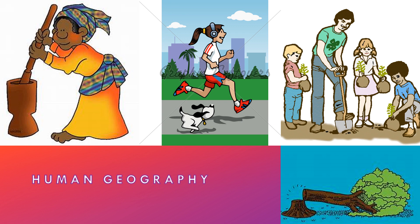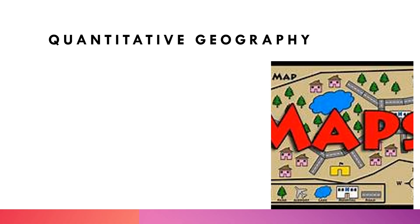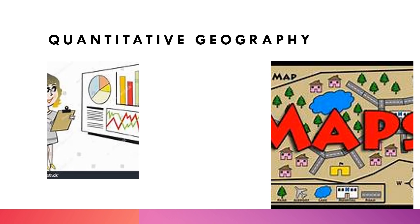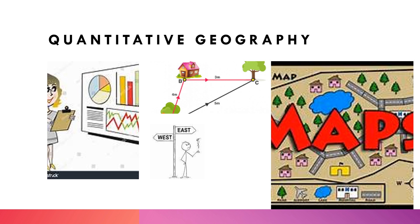Human geography is the way we interact with our environment. Last but not least, we have quantitative geography, which deals with the use of maps and measurement to give geographical information — making and studying maps, collecting and analyzing data, measuring distances, and giving directions.